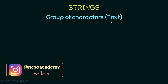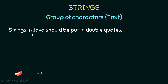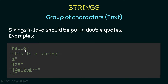First of all, what is a string? Simply, a string is a group of characters — some text. If you want to type some text in Java, it will be a string. All strings in Java should be put in double quotes. For example, the word 'hello' in double quotes is a string. A sentence in double quotes is also a string. Even the number 1 or 125 in double quotes are strings, not numbers.